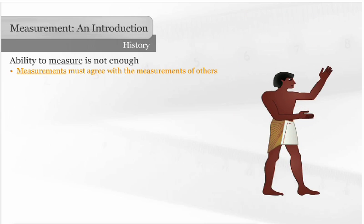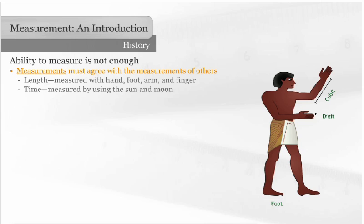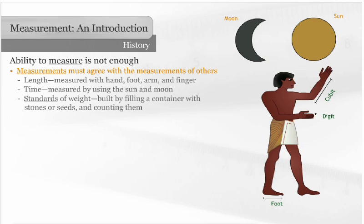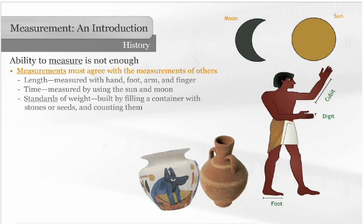Since the earliest times, people have measured length with the hand, foot, arm, and finger. They measured time by observing the patterns of the sun and moon. People built standards of weight by filling a container with stones or seeds and then counting them.